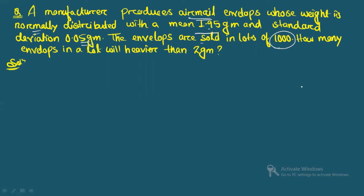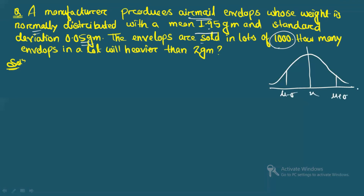Let's look at this graphically using the normal curve. Here μ − σ = 1.95 − 0.05 = 1.90 g, and μ + σ = 1.95 + 0.05 = 2.00 g. So the region between 1.90 g and 2.00 g corresponds to the interval μ − σ to μ + σ on the normal curve.